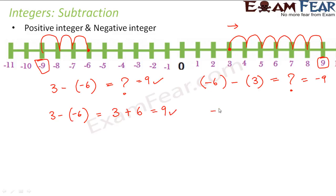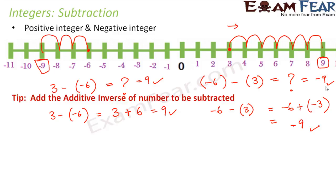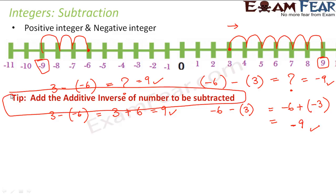Similarly, minus 6 minus plus 3 — subtracting 3 from minus 6 is the same as adding the additive inverse of 3. So minus 6 plus minus 3: to add two negative integers, you find their sum and put a negative sign, and you arrive at the same result. So you can follow either approach. Whenever you are subtracting two integers, you can use the additive inverse of one number and find the sum, or go by the rules of subtraction — both ways you will arrive at the same result.